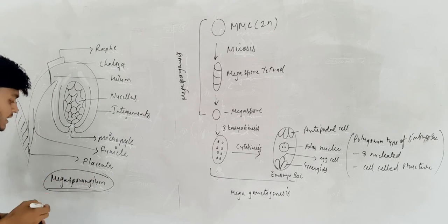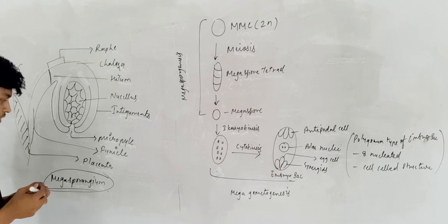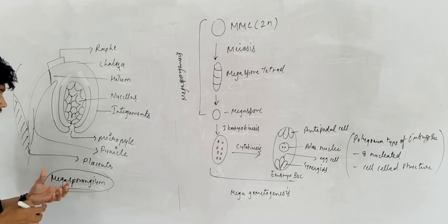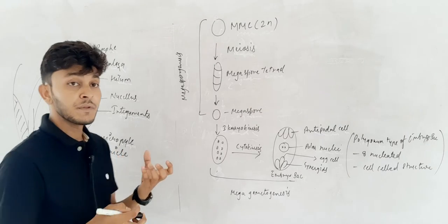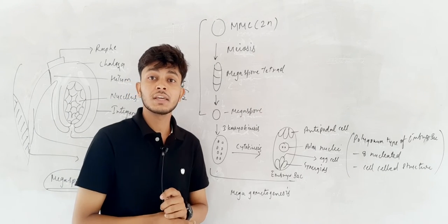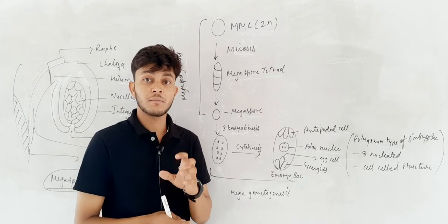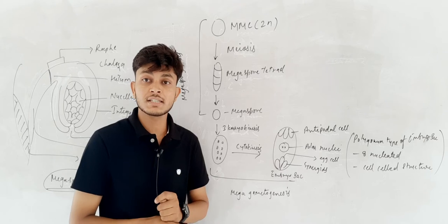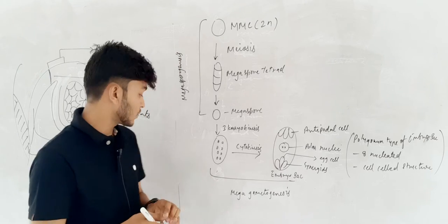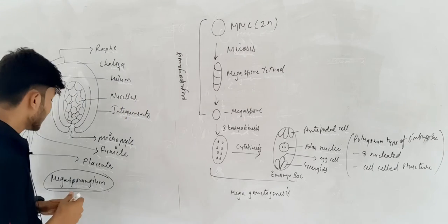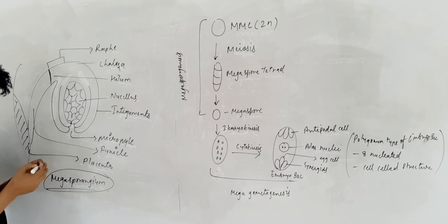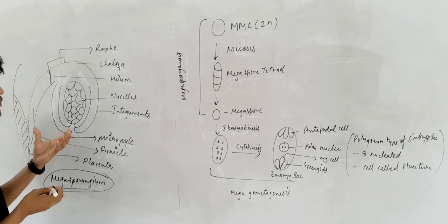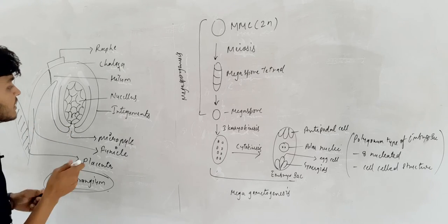In this topic, we will talk about megasporanthium. Megasporanthium is obtained from the ovary. In the ovary there are locules, and each locule contains more than one megasporanthium. If you talk about megasporanthium, it is found — let's look at its structure.